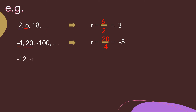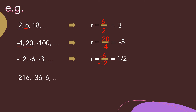For the sequence negative 12, negative 6, negative 3, the common ratio is found by dividing the second term, negative 6, by the first term, negative 12. Dividing these two gives us positive one half.